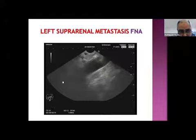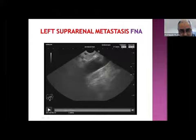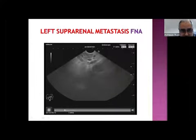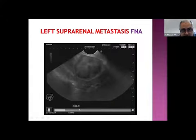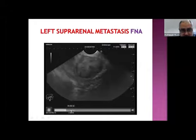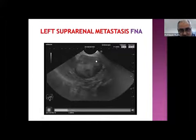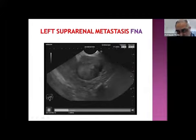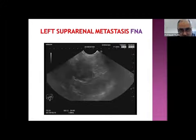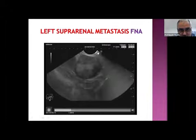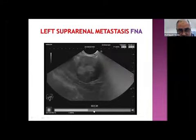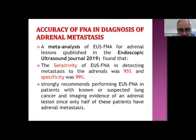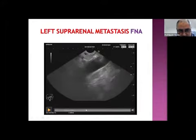FNA can be done very simply because the left suprarenal mass is very near to the echoendoscope — very easy to perform. FNA is enough, though FNB may be better; I think both are equal because the cells are very characteristic of suprarenal malignancy. It is very easy to do because the left suprarenal is very close to the scope in the fundus of the stomach. I have a nice series of left suprarenal FNA with high sensitivity and specificity.